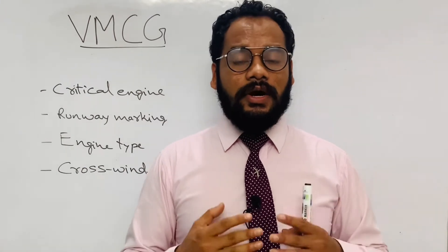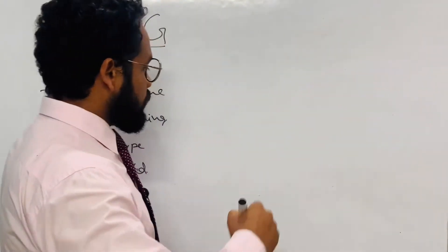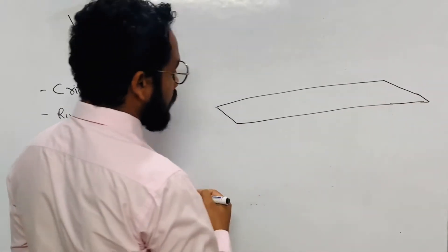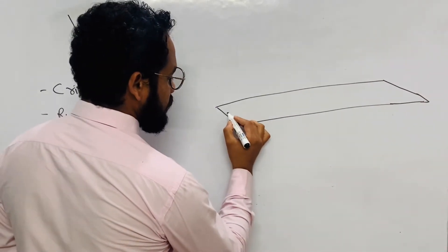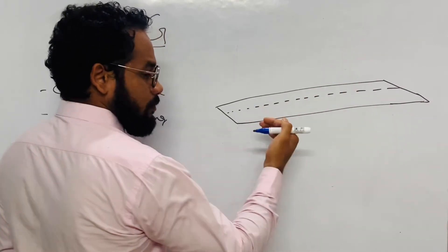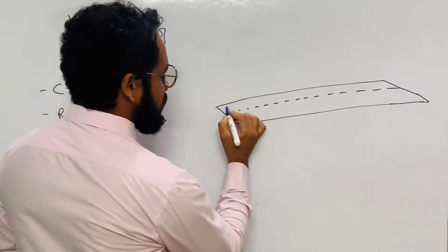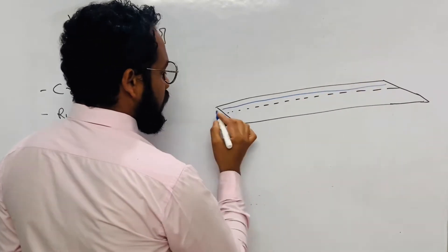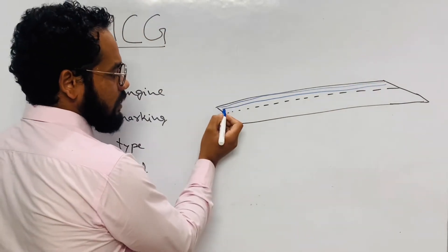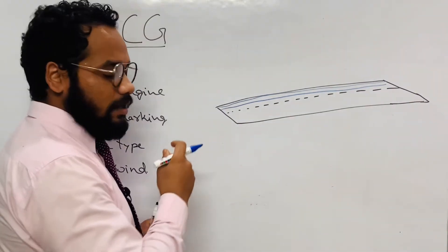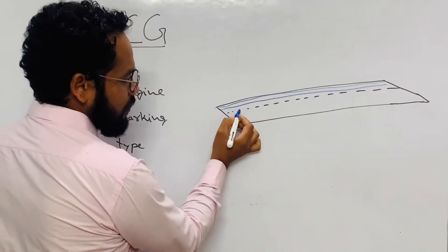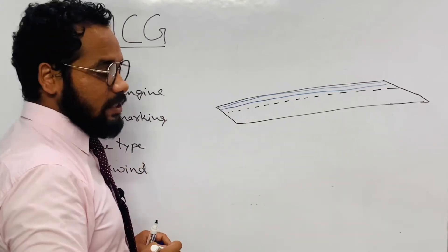Now let us discuss how VMCG is determined. Suppose this is a runway with a center line. Blue lines are marked on the left-hand side of the runway — one at five meters and one at ten meters from the center line — since we have planned to shut down the right-hand side engine. The pilot chooses which blue line to use as a guide for precise trajectory while the aircraft is accelerating on the runway.